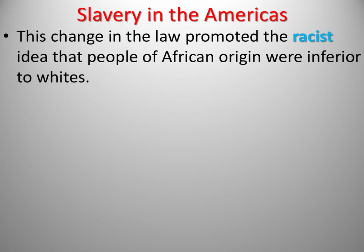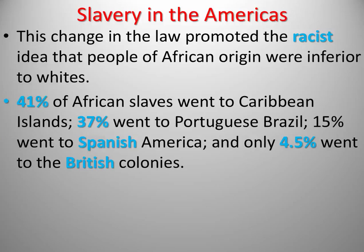With regard to slavery in America, this change in law is what promoted the idea of racism against people of African origin — that they are inferior to whites. It's unfortunate, because a lot of white people who came over during the early stages of America's development were indentured servants themselves, essentially like slaves, except that they could earn their freedom. These laws created a system where blacks could not. Looking at the distribution: 41% of African slaves went to the Caribbean, 37% to Brazil, Spain had about 15%, and the British colonies had around 4.5% — not a lot, but it had a big impact on the economy and how we structured our country.